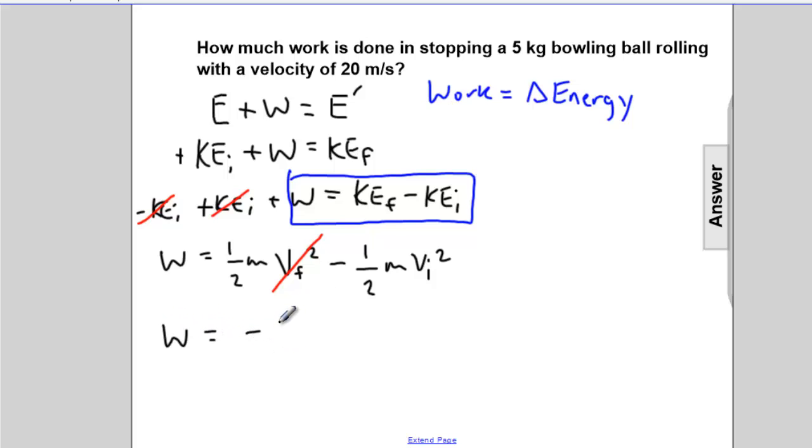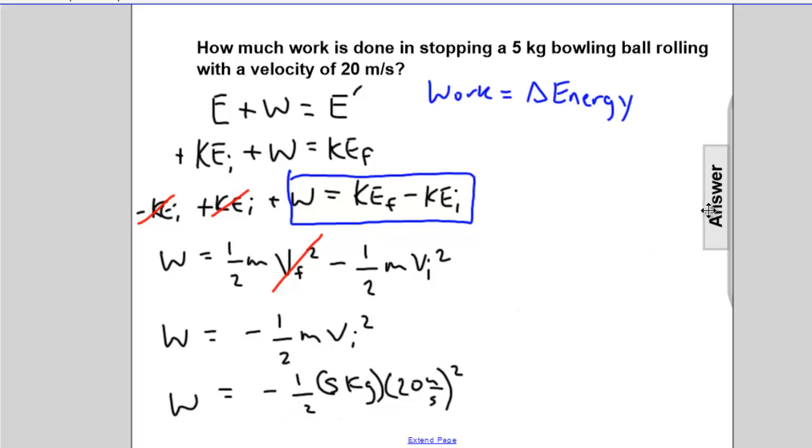So the work done is equal to negative one-half times the mass. That's 5 kg times the square of the velocity. That's 20 meters per second quantity squared. 20 squared is 400 times 5 is 2,000 divided by 2 is going to be 1,000 joules.